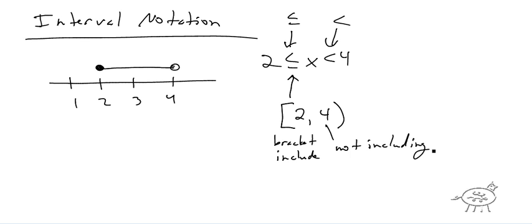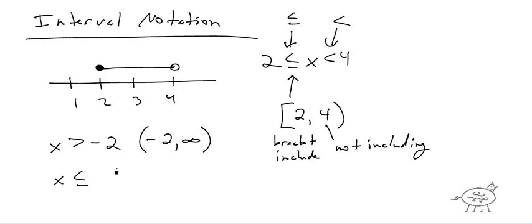If x is greater than negative 2, that's represented as negative 2 to infinity: (−2, ∞). Infinity always gets a parenthesis — never a bracket — because a bracket means you're actually there, and infinity is not a number; you only approach it. Similarly, x less than or equal to 5 is written (−∞, 5]. Remember: infinity or negative infinity can only be a parenthesis, never a bracket.